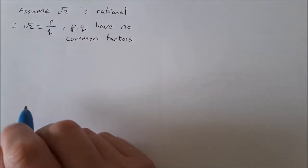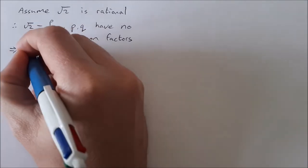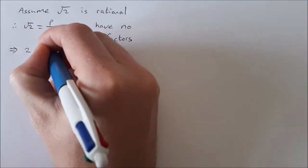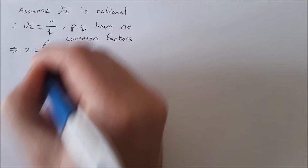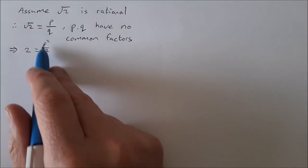Okay, so now into the proof. If the square root of 2 is p over q, this implies that if we were to square both sides, 2 would be equal to p squared over q squared.